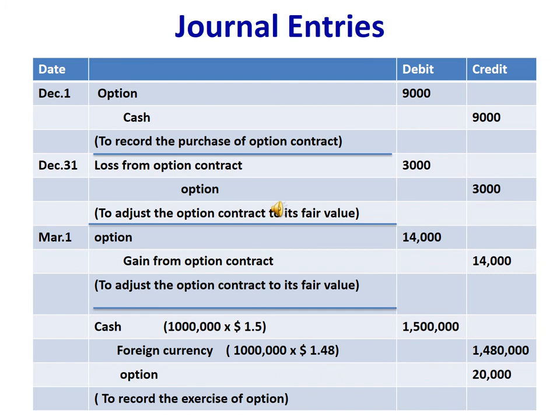Journal entries: On December 1st, we record the purchase of the option contract — debit Option $9,000 and credit Cash $9,000. On December 31st, we adjust the option contract to its fair value — debit Loss from Option Contract $3,000 and credit Option $3,000.